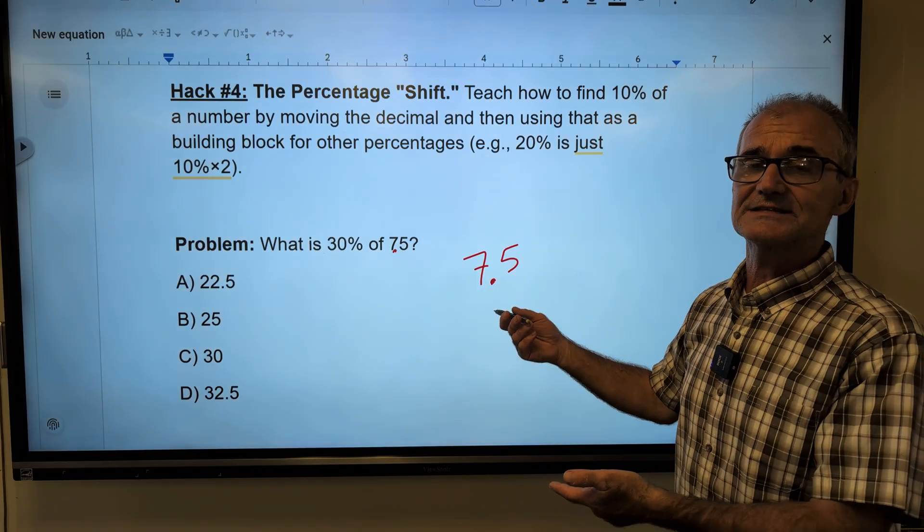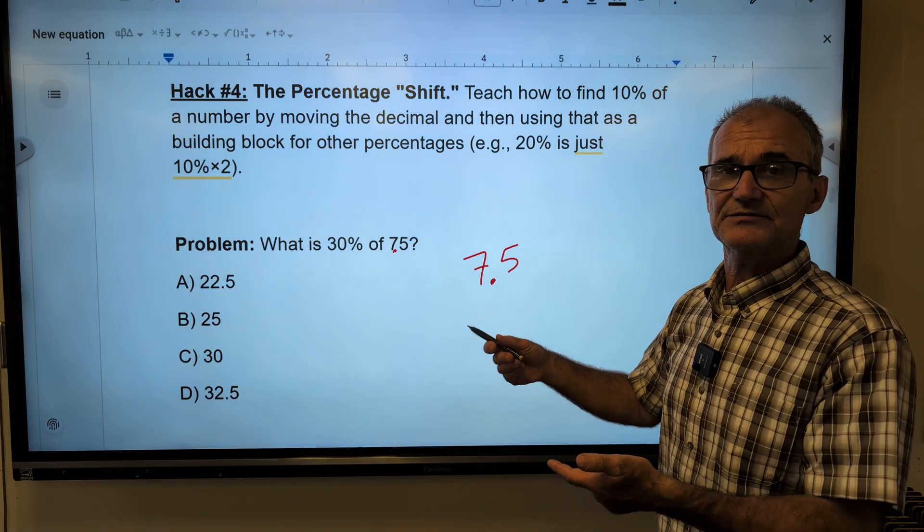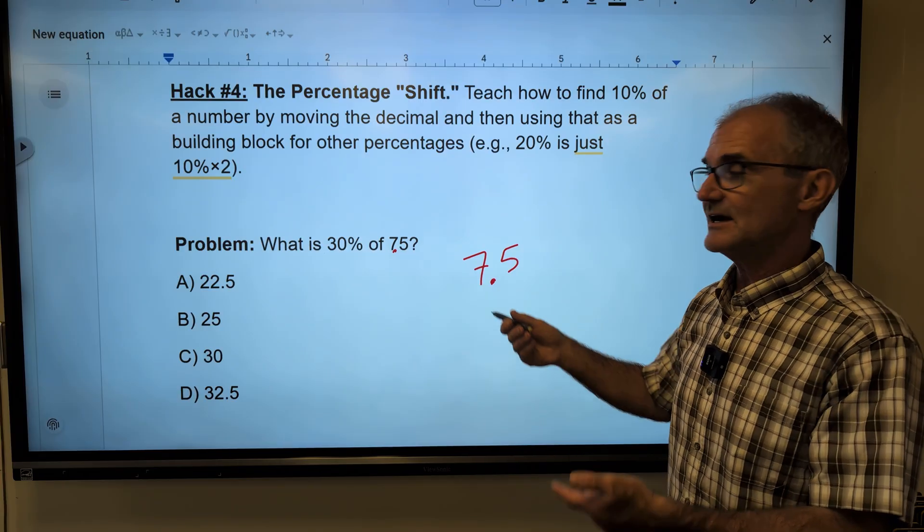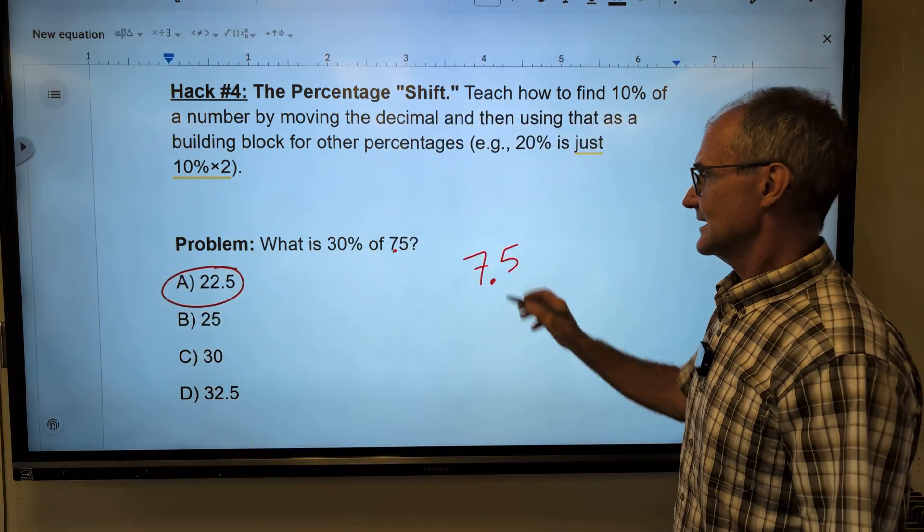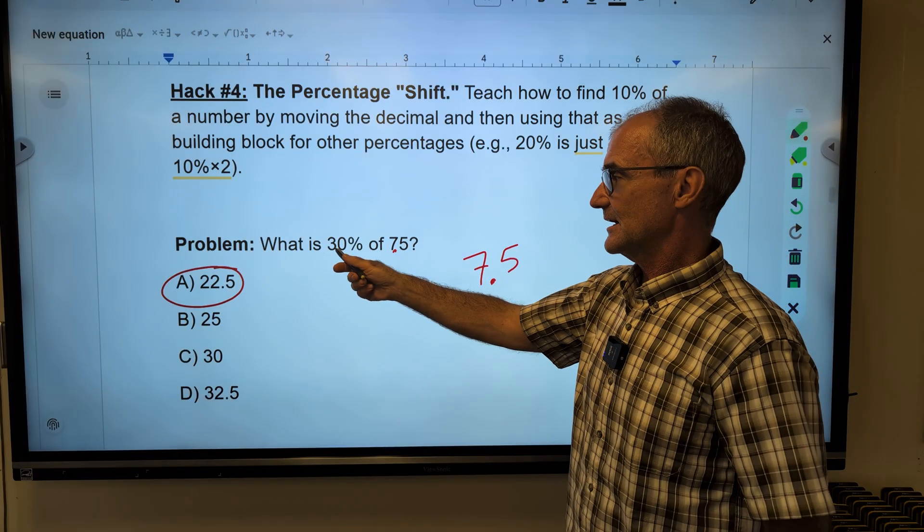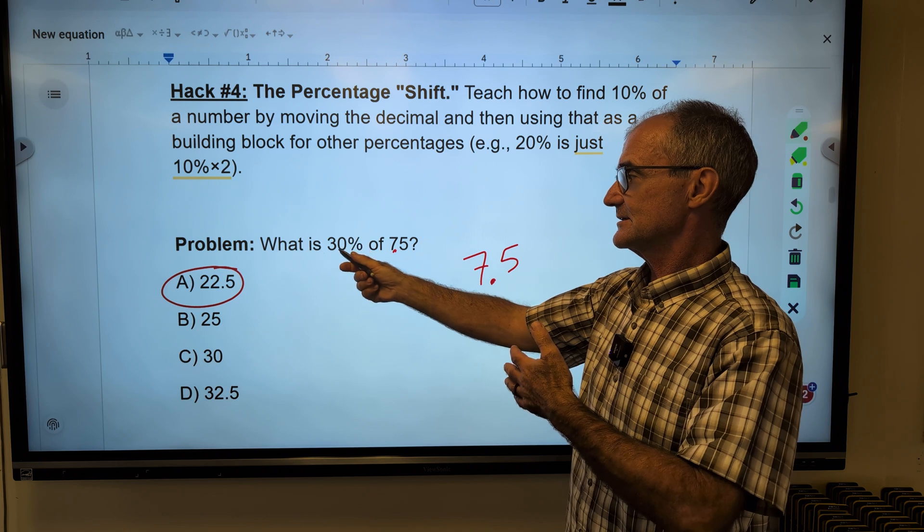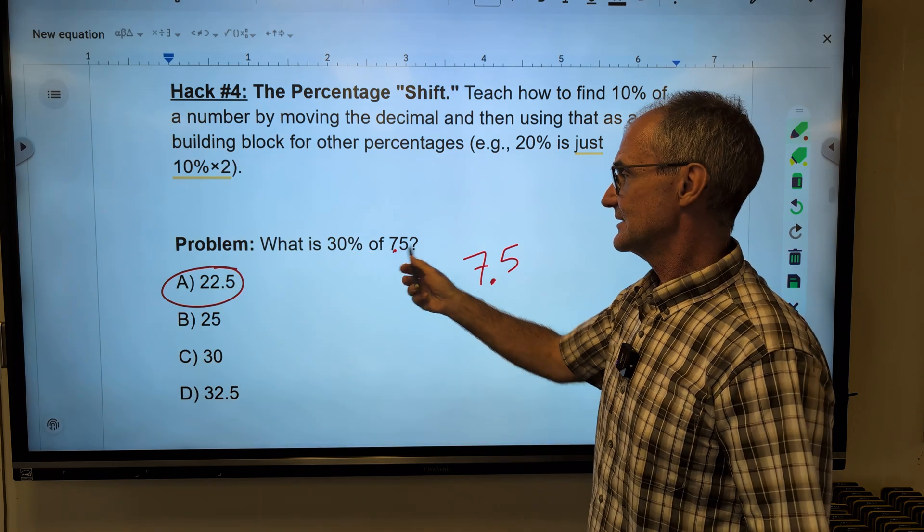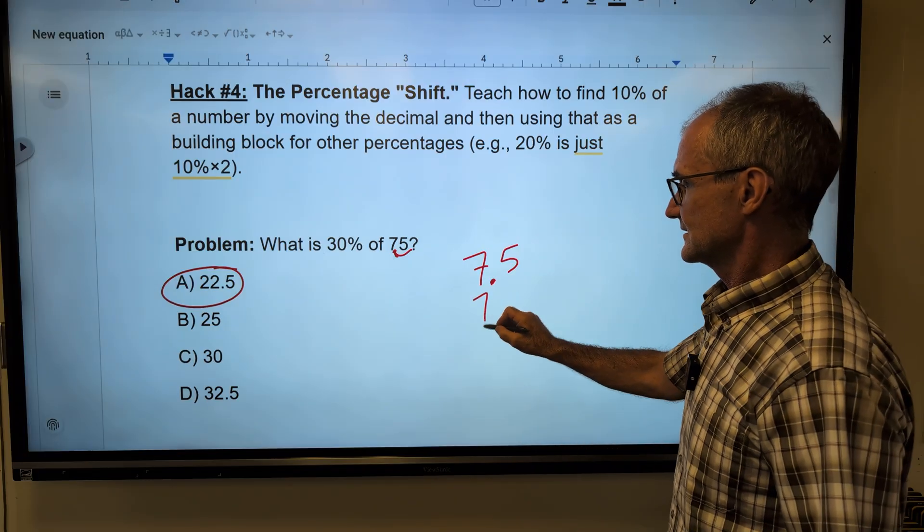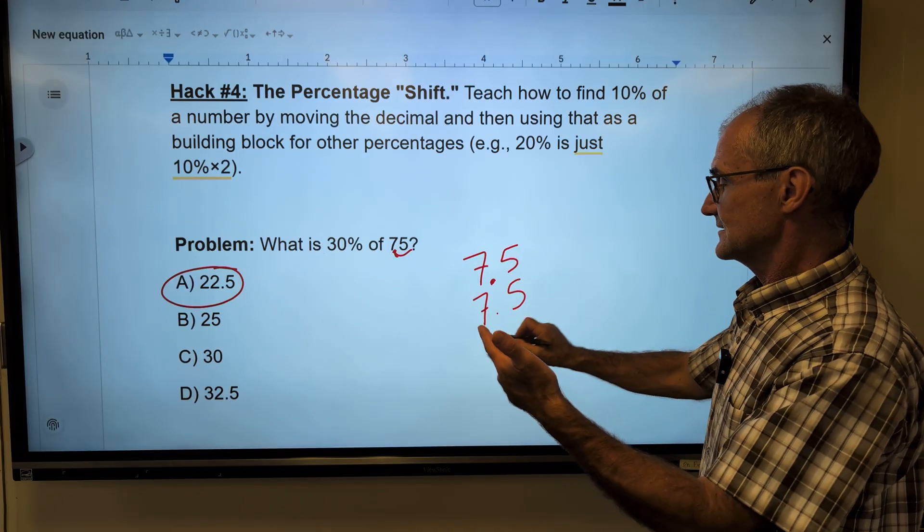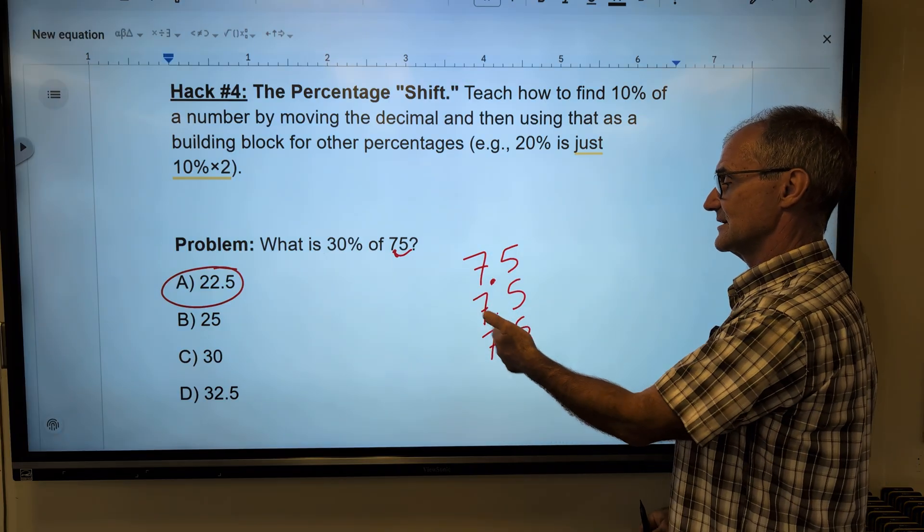20% would be twice that, 15. 30% would be that 15 plus 7.5 or 22.5. I did that a little too quick. What I'm saying is 30 times 75 is going to be pretty tricky. So what I'm going to do is I'm going to just take 10% of 75. That moves the decimal place over once to give me 7.5. There's 10%. There's another 10%. There's another 10%. So I have 10% plus 10% plus 10%.